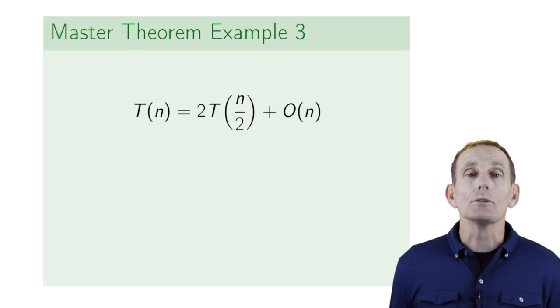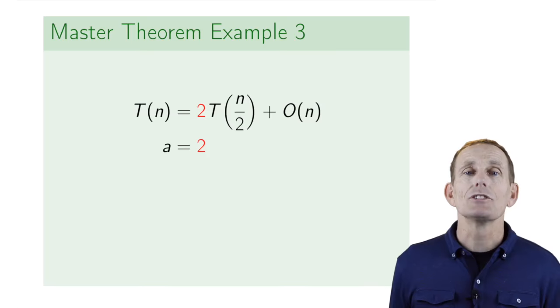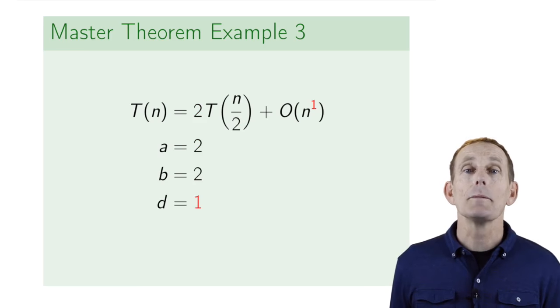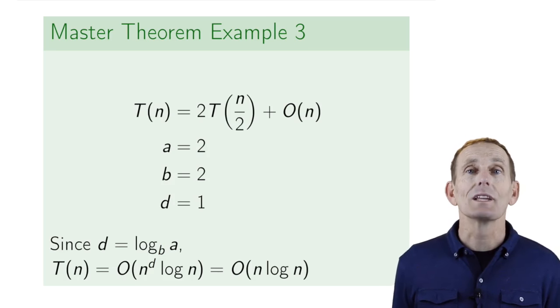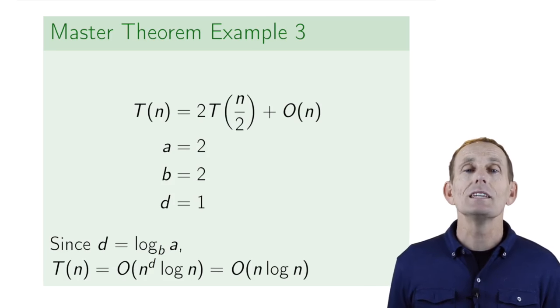If we reduce the 3 down to a 2, what happens? Well, here, a is 2, b is 2, d is 1. Log base b of a is log base 2 of 2, which is just 1. So now d is equal log base b of a. We're in case 2 now, and so T(n) equals big O of n log n.